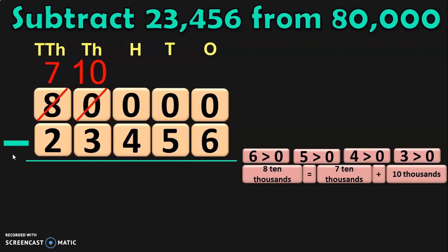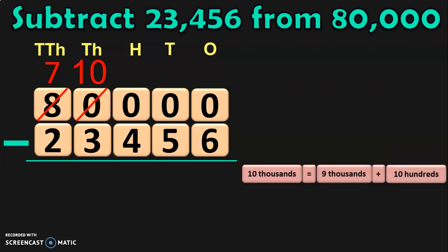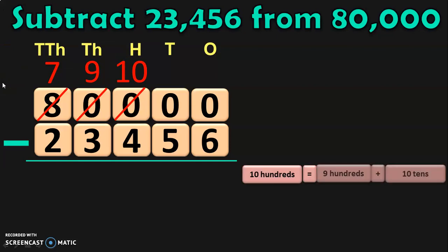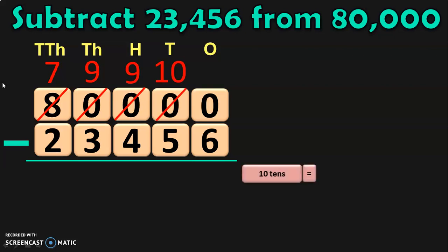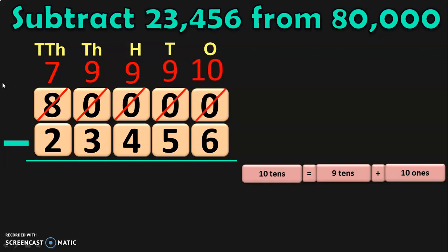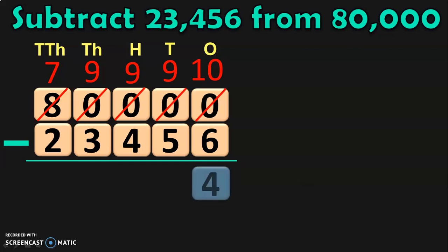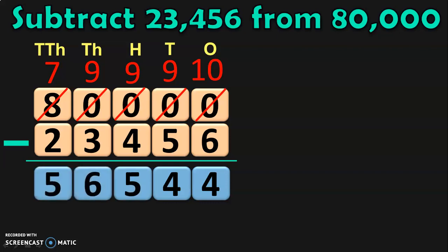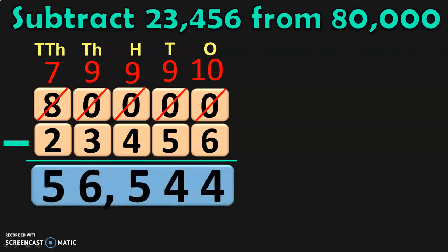Now, again, you have to regroup this 10 thousands, which is equal to 9 thousands plus 10 hundreds. When you regroup, you will retain 9 thousands in the thousands place and 10 hundreds moves to the hundreds place. Now, again, you will have to regroup the digits in the hundreds place. 10 hundreds can be regrouped as 9 hundreds plus 10 tens. Retain the 9 hundreds in the hundreds place and take the 10 tens to the tens place. Now, again, you are going to regroup the digits in the tens place. 10 tens is equal to 9 tens plus 10 ones. So, you will get 9 in the tens place and 10 ones. Now, you can do the subtraction very easily: 10 minus 6 is 4, 9 minus 5 is 4, 9 minus 4 is 5, 9 minus 3 is 6, and 7 minus 2 is 5. So, the difference between the two numbers is 56,544.